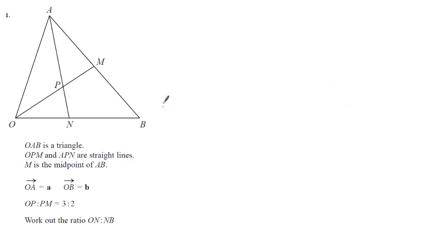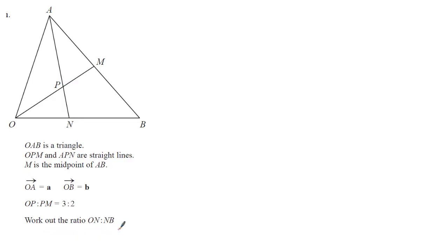Here we have the diagram of a triangle OAB. We've been given the straight lines OPM and APN, as well as the midpoint M which lies halfway between A and B. We've been given the vectors O to A and O to B as a and b respectively, and we've also been given the ratio OP to PM which is equal to 3 to 2, and we've been asked to work out the ratio ON to NB.